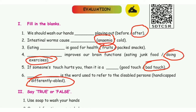We should wash our hands after playing out. Second one — the answer is anemia. Third one — eating fruits is good for health. Fourth one — doing exercise improves our brain functions. Fifth one — if someone touches and hurts you, then it is a bad touch. Sixth one — 'differently abled' is the word used to refer to a disabled person.